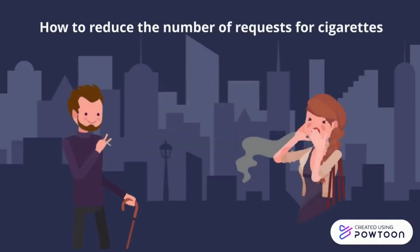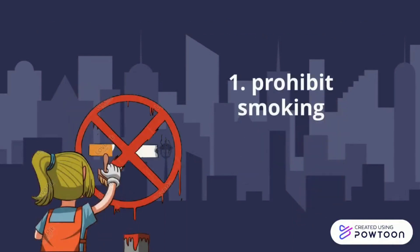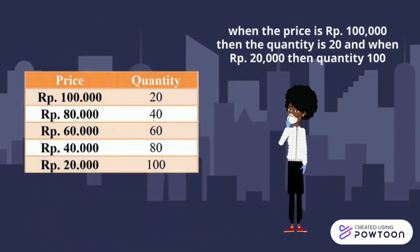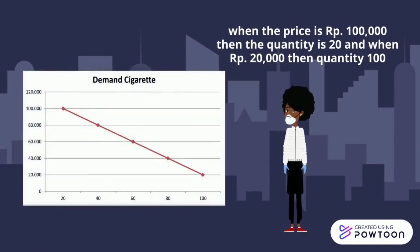Case study: how to reduce the number of requests for cigarettes. One, prohibit smoking. Two, increase taxes on cigarettes. For example, when the price is 100,000, then the quantity is 20. And when the price is 20,000, the quantity is 100.